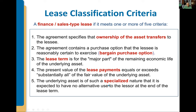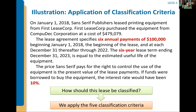Fifth: if the asset is so specialized that nobody else could use it except the lessee — specifically designed for a use that no one else could utilize. Perhaps in large refineries there may be very large equipment specifically designed that could only work in that particular configuration in that factory. You'll know it when you see it out there practicing accounting.